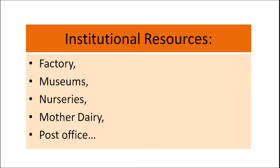The next category is institutional resources. These include factory, museum, nurseries, mother dairy, post office, or any other place near your school or within the district. For example, taking students to a post office — students will see what kind of people work there, what is their work, what they sell, what are stamps, how stamps differ from envelopes, what is a postcard. So there are a number of things children can learn from any institutional resource.